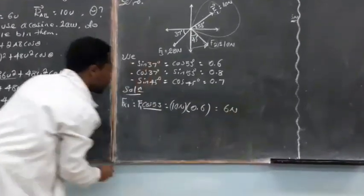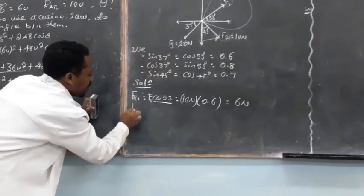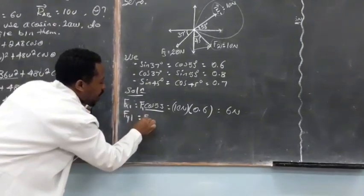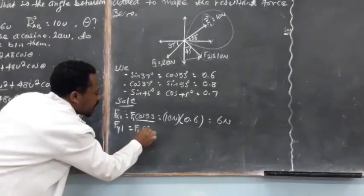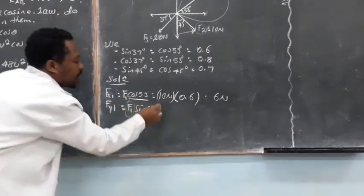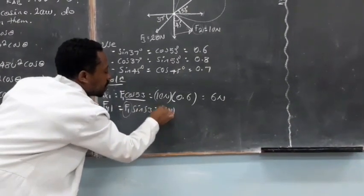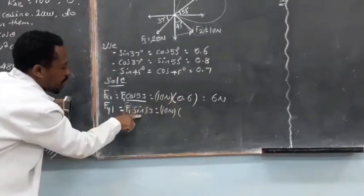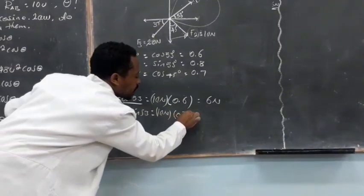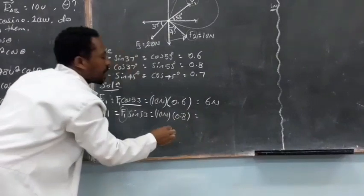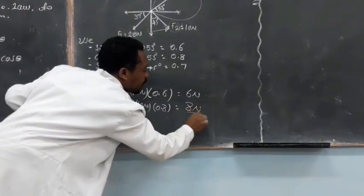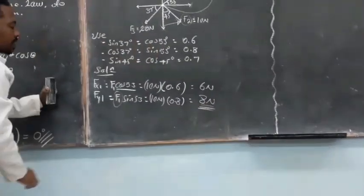So the x-component magnitude is 6 newtons. And then F1y equals F1 times sine 53 degrees. F1 is 10 newtons and sine 53 degrees is 0.8. At the end we will have 8 newtons along the positive y-axis.